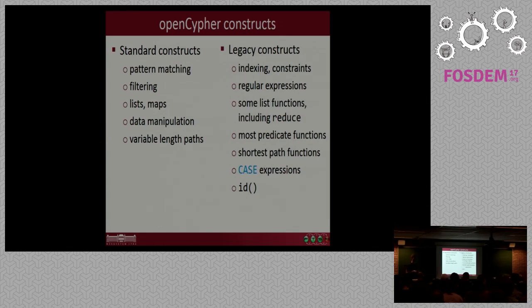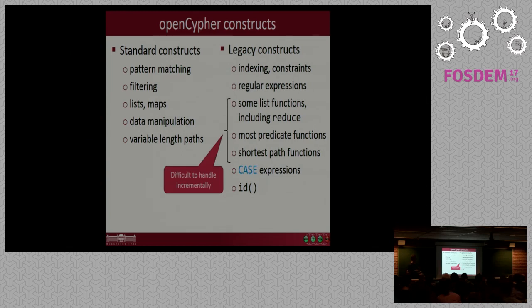So, some features are excluded from the standard. These are called the legacy constructs. These are mostly implementation specific stuff like load CSV, index constraints. There are regular expressions which are notoriously difficult to get right between different programming languages. Some of the more sophisticated list functions, for example, reduce are removed because these are very powerful and you can almost program with reduce in your queries. And there are a lot of predicate functions removed, functions that calculate the shortest path, case expressions and IDs. And interestingly and somewhat accidentally, some of the legacy constructs are also very difficult to handle incrementally. So, in our prototype implementation, we do not focus on the legacy constructs but try to implement a meaningful set of the standard constructs in OpenCypher.